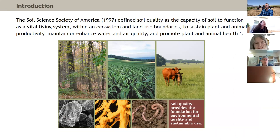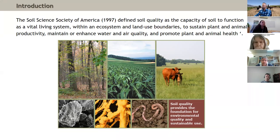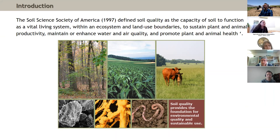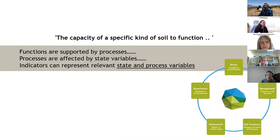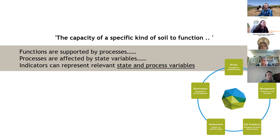When we talk about soil health, the definition by the Soil Science Society of America defines soil quality as the capacity of soil to function as a vital living system within an ecosystem or land use boundaries — to sustain plant and animal productivity, maintain or enhance water and air quality, and promote plant and animal health. It means the ability of soil to function and support different ecosystem services.